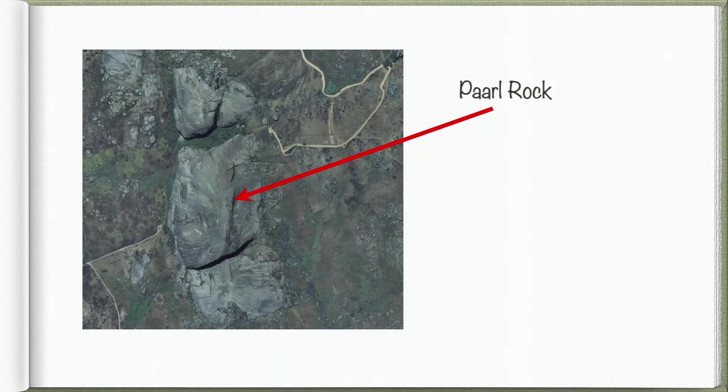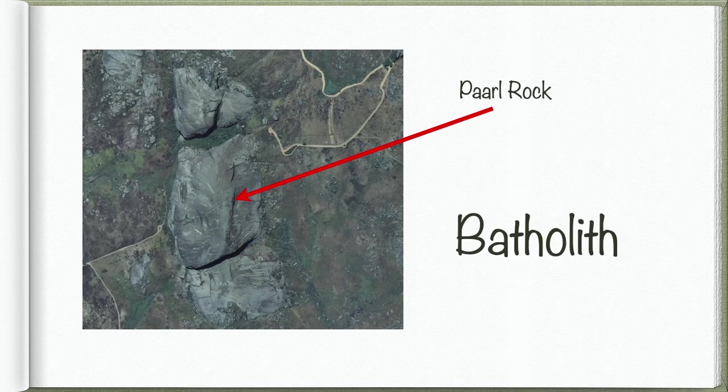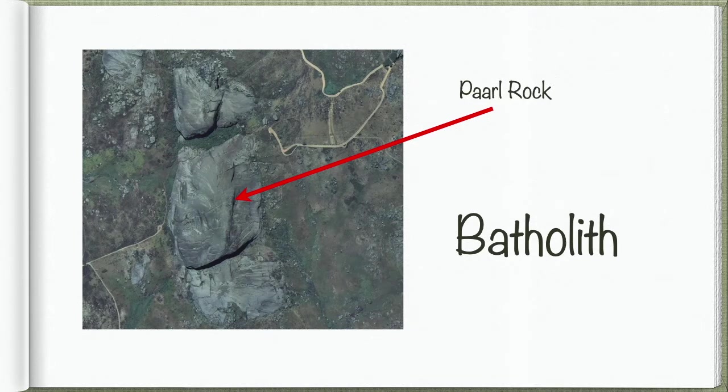Now, the Paarl Rock is a batholith. A batholith is where we get a massive igneous intrusion deep down in the Earth's crust. And so it doesn't form on the surface as volcanic igneous formation. It's a plutonic igneous formation that forms deep down in the Earth's crust.